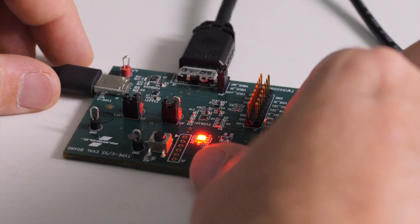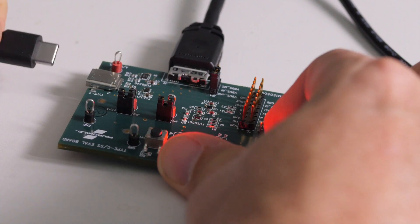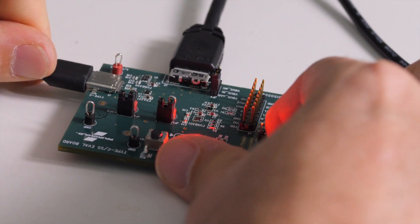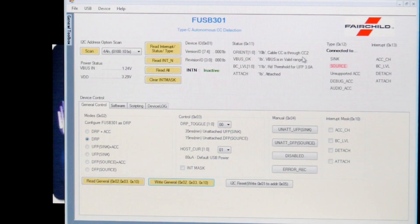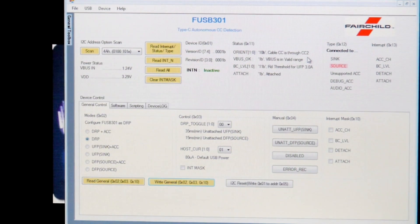If I invert the connection, you will now see the only thing that has changed is the orientation is now through CC2. It continues to show that the charger is capable of sourcing 3 amps of power, and it continues to be connected as a source.